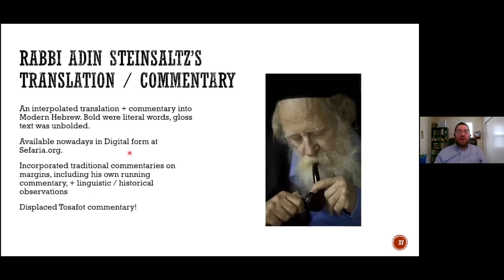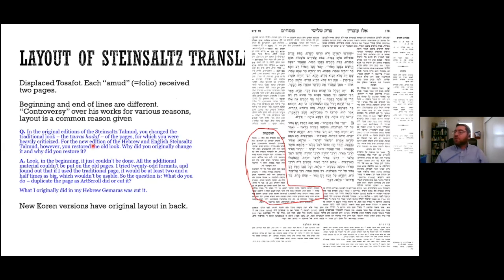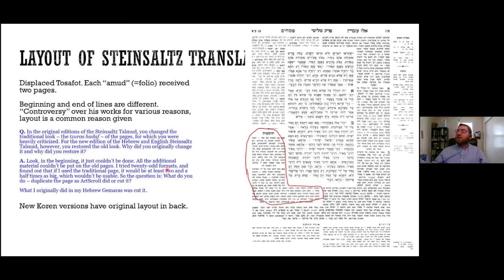A famous example where a Talmudic printing deviated is from Rabbi Adin Steinsaltz. He made a commentary — now available in digital form — and there was a big controversy because he introduced his commentary into the page where Tosafot had been, and moved Tosafot's commentary lower. He was heavily criticized for it, and he basically answered in an interview that it couldn't really be done otherwise because of all the difficulty of pagination — should we duplicate the page and put the commentary on the side, or cut it into a different layout? He cut it, and there was a lot of blowback.